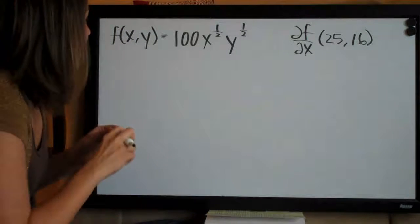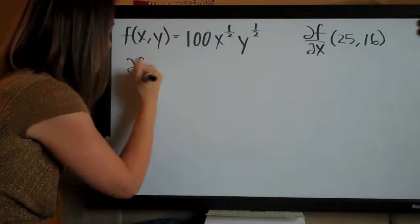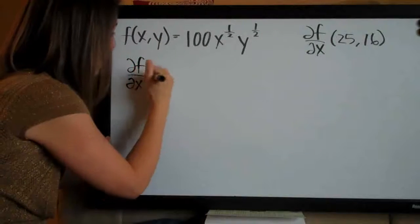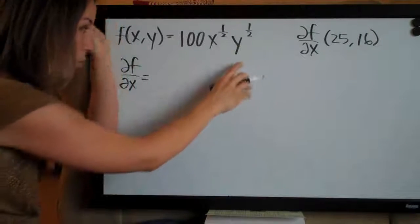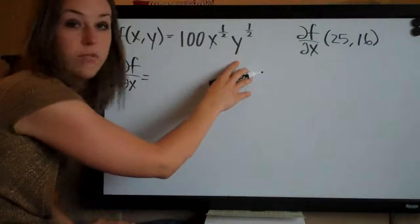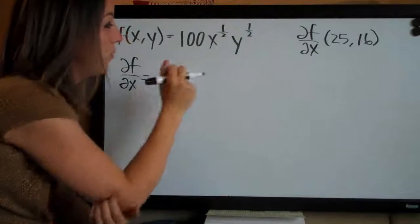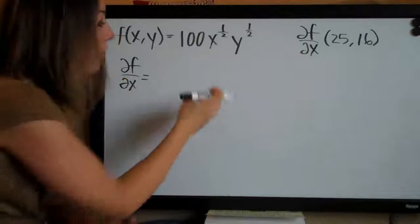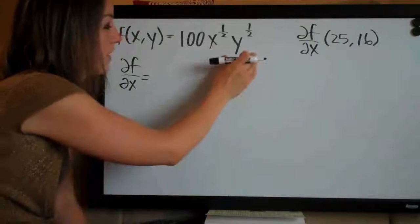So let's go ahead and take the partial derivative of f with respect to x. And when we're taking the partial derivative with respect to x, we're holding y, the other variable, as a constant. So the way that I like to do this is to plug in a constant number for y, let's say four, because that will make it easy.